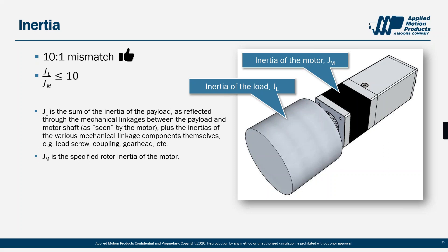In terms of inertia, we want the ratio of total load inertia to motor inertia — commonly called the inertia mismatch — to be no more than 10 to 1. Staying within that 10 to 1 range makes life easier: the motor can accurately control the load during acceleration, deceleration, and while holding position, and you'll avoid difficulty tuning the system or handling the load during maximum deceleration. Essentially, stay within 10 to 1 and life will be good.